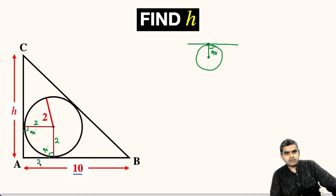This distance will also be 2 units, and this distance will also be 2 units. Let us name these two points as point P and point Q.